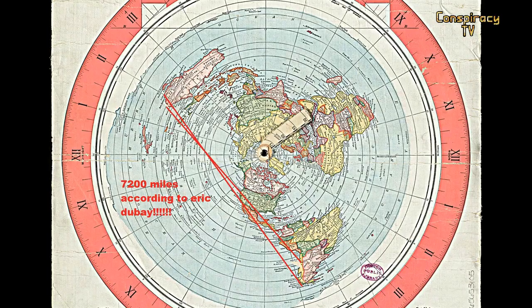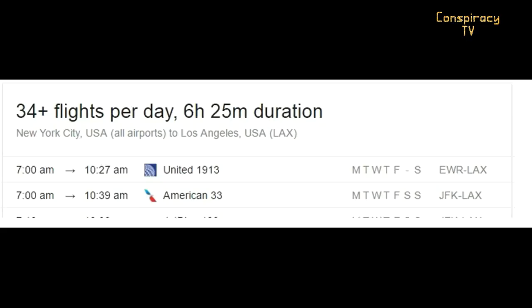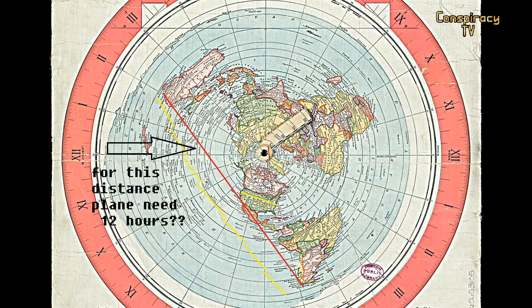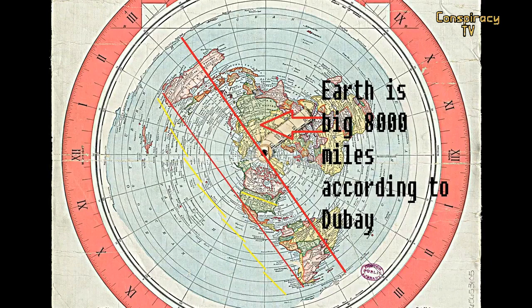If 7,000 miles is the distance from South America to Australia on the flat earth map, then how big are the United States of America? According to flat earth claims, the USA is only 500 to 1,000 miles wide from east to west — yet the average flight from New York to Los Angeles is around 6 hours, while a 7,000-mile flight takes 12 hours. Meanwhile, the entire flat earth from Antarctica wall to Antarctica wall is claimed to be only around 8,000 miles.